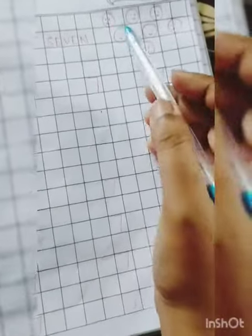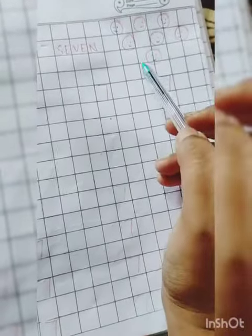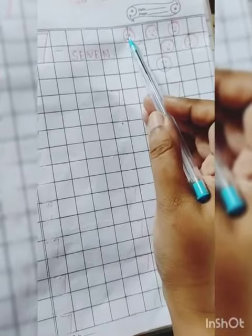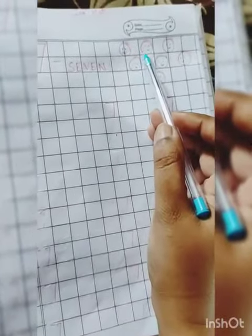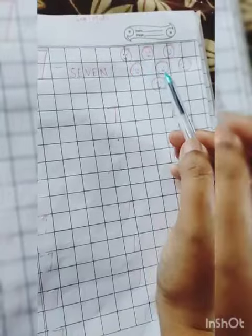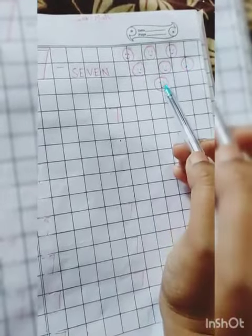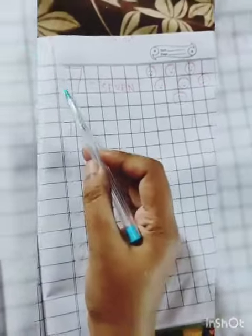Tell me first, how many smileys are there? Let's count it. 1, 2, 3, 4, 5, 6, 7. There are 7 smileys.